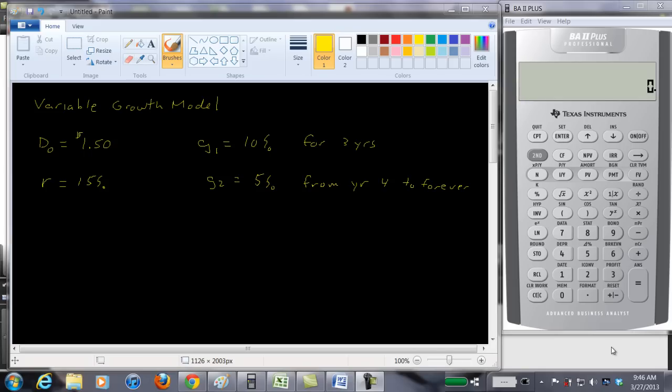In a previous video we looked at the constant growth dividend model for valuing a stock. But what happens if there's more than one growth rate for dividends? Perhaps it's not realistic to say that the dividend for ABC company is going to be five percent per year forever.